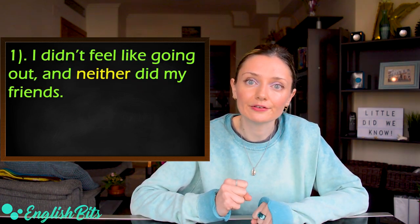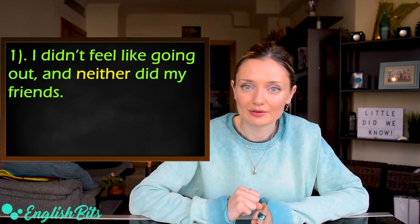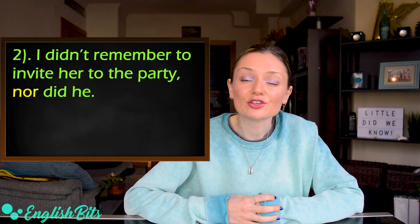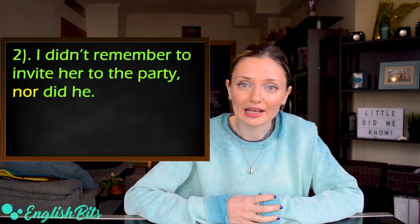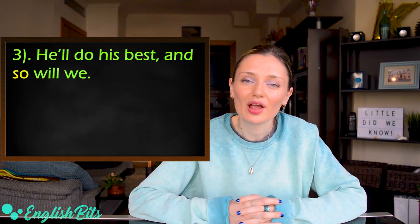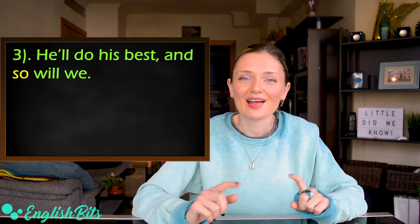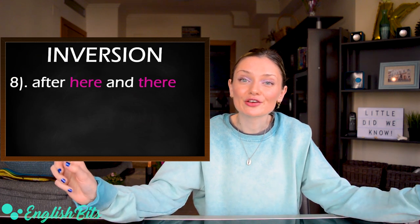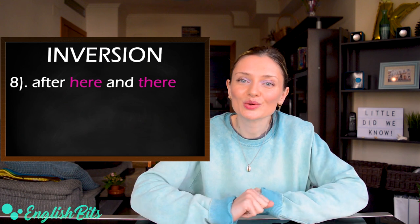And now some examples. The first one, I didn't feel like going out and neither did my friends. The second example, I didn't remember to invite her to the party, nor did he. And the last example, he'll do his best first and so will we. Number eight, we invert words after here and there.